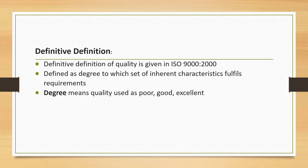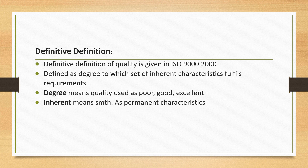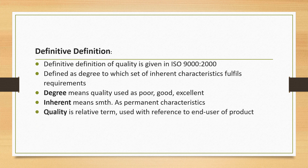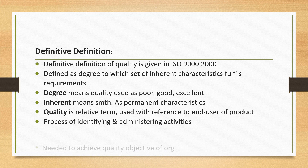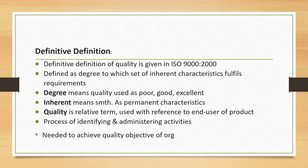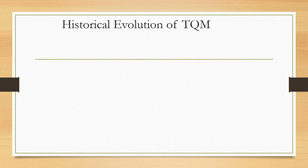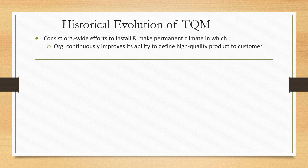According to ISO 9000:2000, quality is defined as the degree to which a set of inherent characteristics fulfills requirements. 'Degree' means quality can be described as poor, good, or excellent. 'Inherent' means something permanent in characteristics. Quality is a relative term used with reference to the end user of a product — it is the process of identifying and administering activities needed to achieve the quality objectives of the organization.